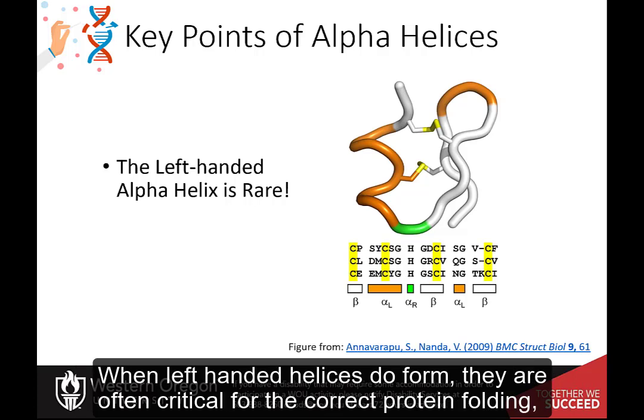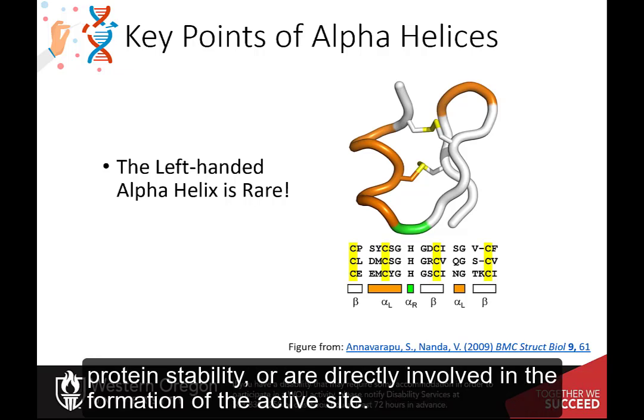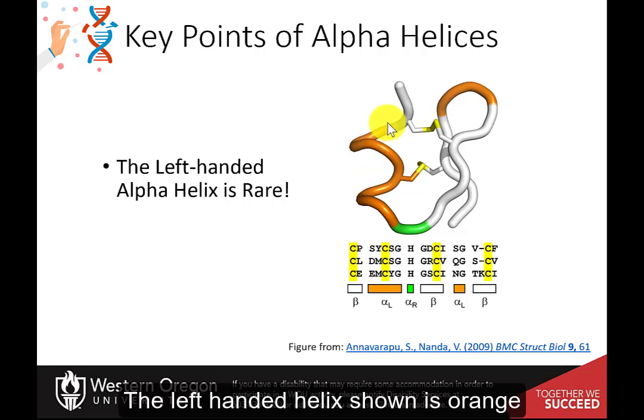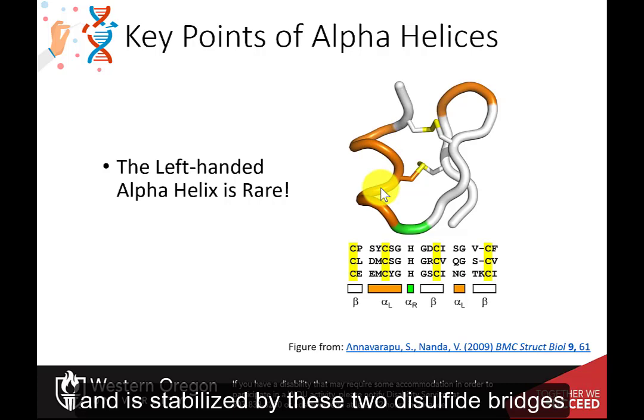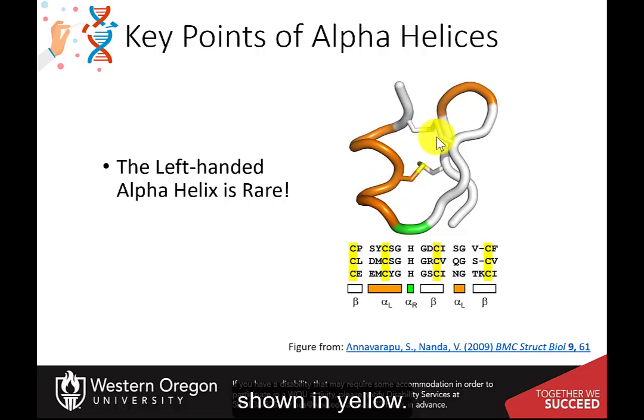When left-handed helices do form, they are often critical for the correct protein folding, protein stability, or are directly involved in the formation of the active site. The left-handed helix shown is orange and is stabilized by these two disulfide bridges shown in yellow.